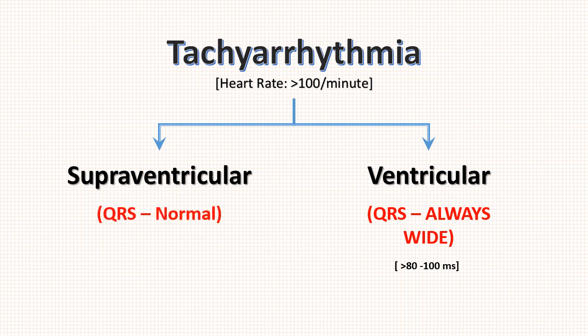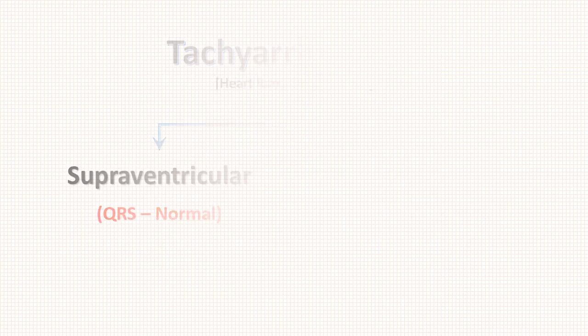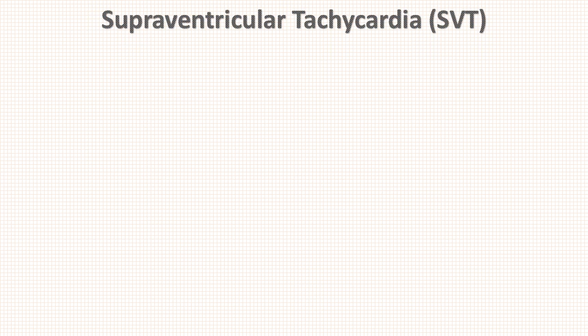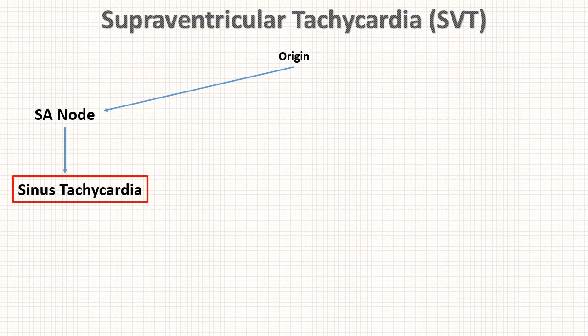QRS complex is usually normal in supraventricular tachycardia. Now let us study each of them in detail. First we will discuss supraventricular tachycardias, which are classified depending upon their origin. First is SVT originating from the SA node, and the cause is sinus tachycardia.